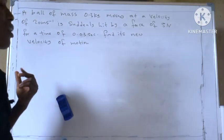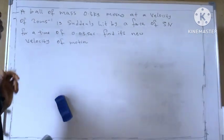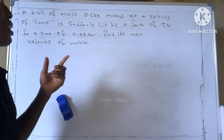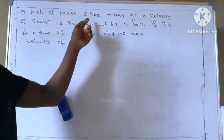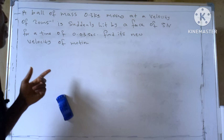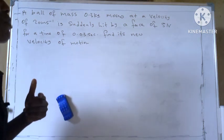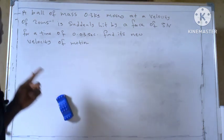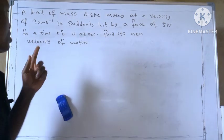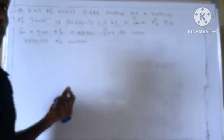Hi, welcome back to my channel. So this is a calculation under first law, second law and third law of motion in physics. It says a ball of mass 0.3 kilogram moving at a velocity of 20 meter per second is suddenly hit by a force of 5N for a time of 0.03 second. Find its new velocity of motion.